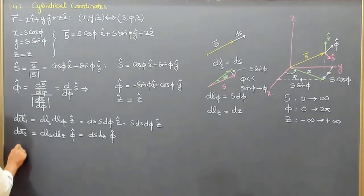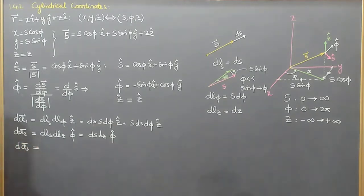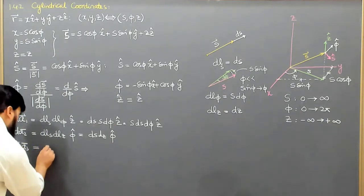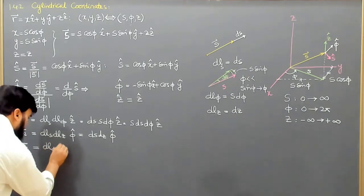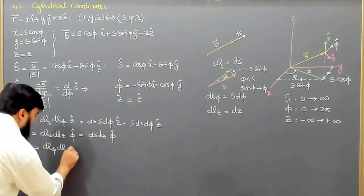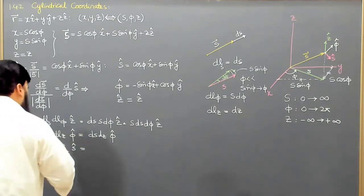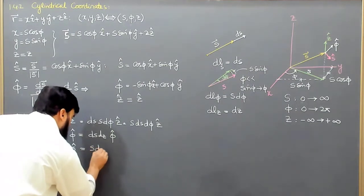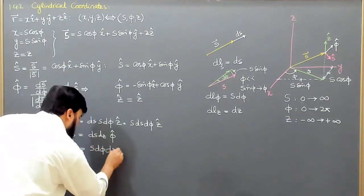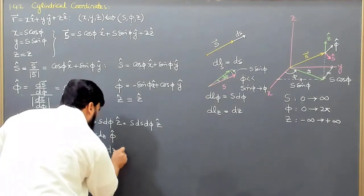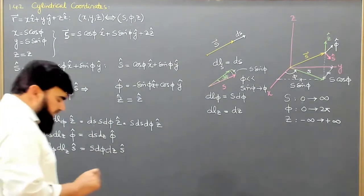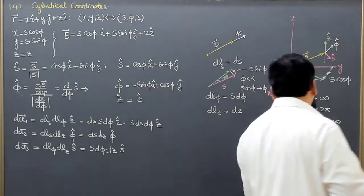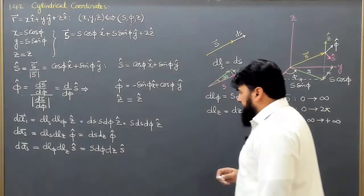Similarly, we can write another area element DA3, which is equal to DLφ times DLz. This gives DLφ and DLz in the ŝ unit vector. DLφ is equal to s dφ dz, so this is s dφ dz in the ŝ unit vector. We can find area from any one of these, and each will give us the right result.